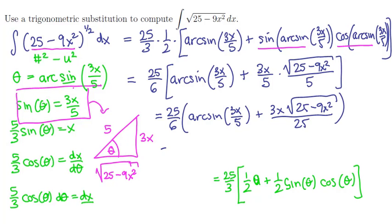Now if we were to distribute this 25 sixths in we would have 25 sixths times the arcsine of 3x over 5 and the 25 and the 25 would cancel the 3 would go into the 6 twice and we would have 1 half x times the square root of 25 minus 9x squared.